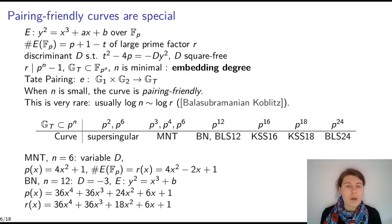And in this case, we have, for example, a supersingular curve. Miyaji-Nakabayashi-Takano curve of embedding degrees 3, 4, and 6. Barreto-Naehrig, Barreto-Lynn, and Scott curve of embedding degree 12. Kachisa-Schaefer and Scott curve of embedding degrees 16 and 18. And other BLS curve. For example, for MNT curve of embedding degree 6, we have the parameters of the curve p and r given by quadratic polynomials.